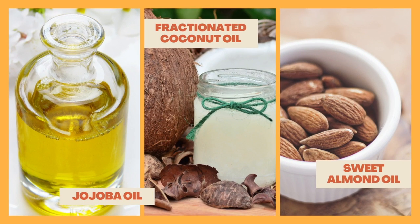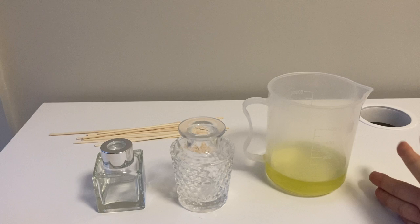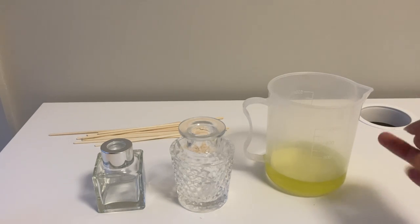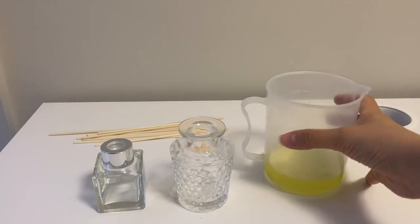Other carrier oils you can choose to use include jojoba oil, fractionated coconut oil and sweet almond oil. You may pick fractionated coconut oil if you don't like the yellow color of the oil in your diffuser. I really like how the yellow stands out in this case.